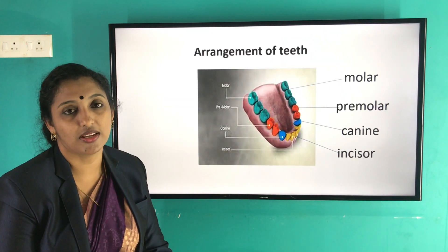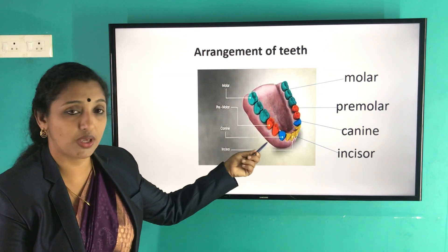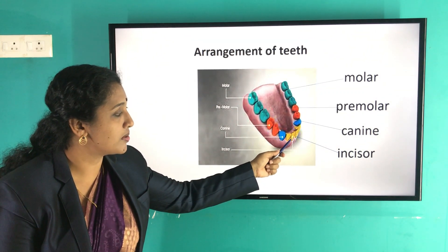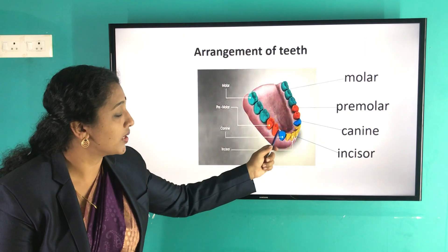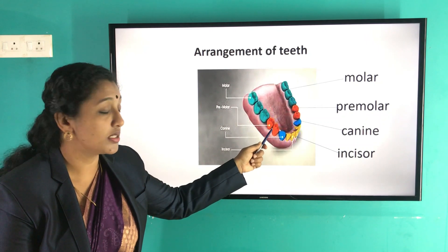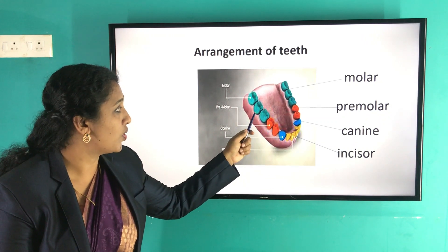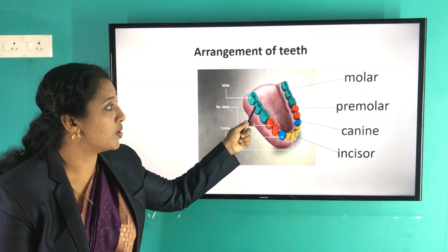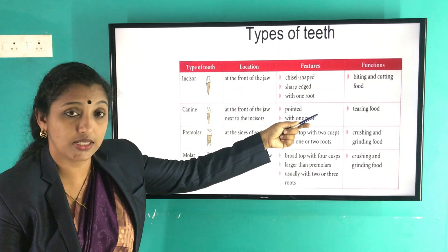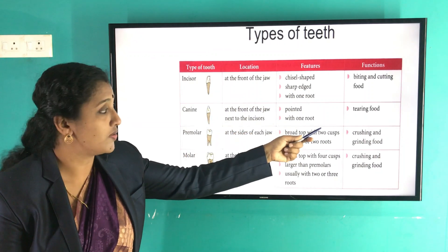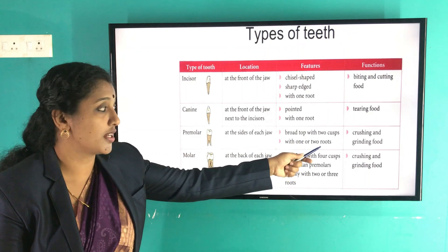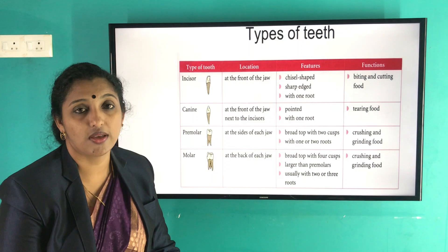In our mouth, teeth are arranged in a special manner. The yellow-colored teeth are the incisors. Behind them are the blue-colored teeth known as canines. The orange-colored teeth represent premolars, and the last ones are known as molars. Each tooth has its own function. Incisors help to bite and cut food. Canines help to tear food. Molars and premolars help for crushing and grinding food.